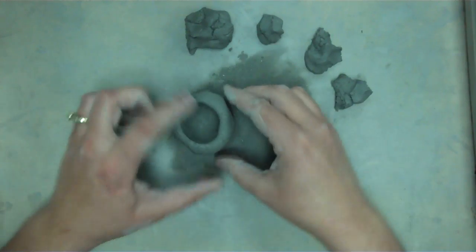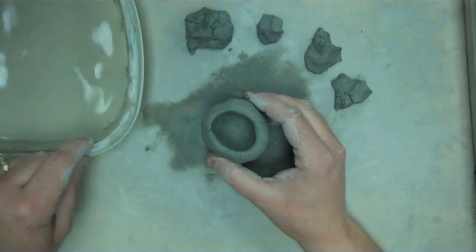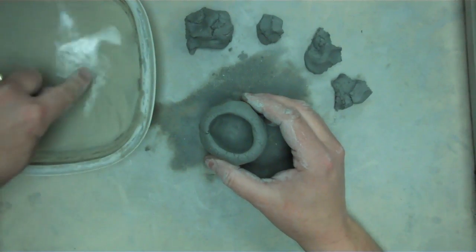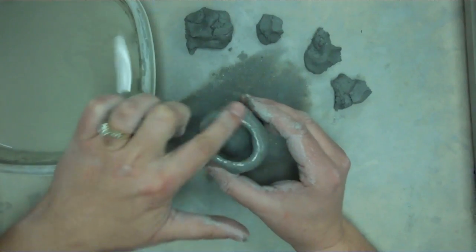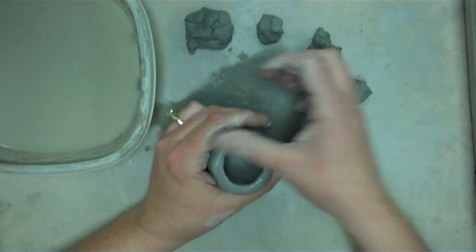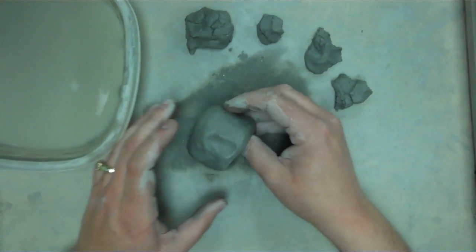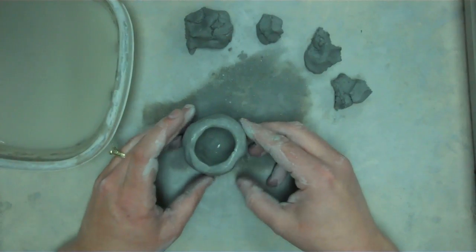If your clay starts to crack, you can dip your finger into the slip. Now slip is a mixture of water and clay. So you dip your finger in there and you can wet it just a little bit, not too much because we don't want it to be soggy. Alright, so this is going to be our monster's mouth.